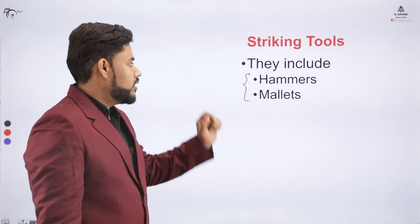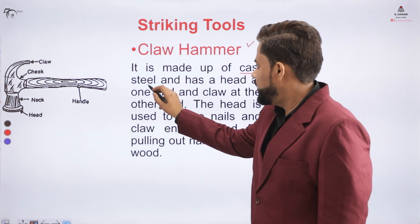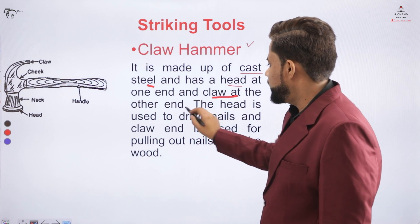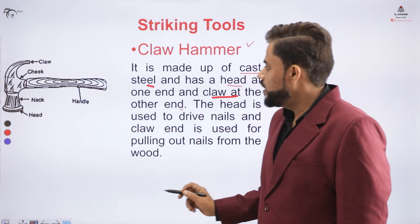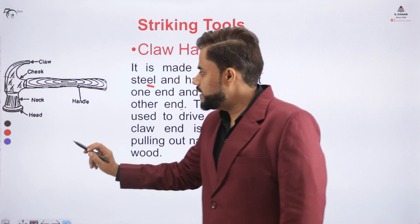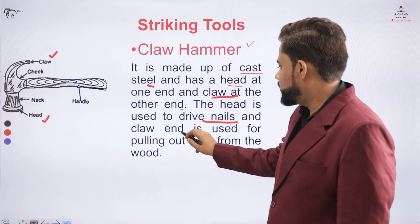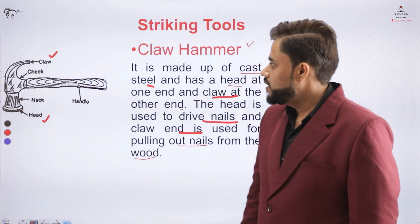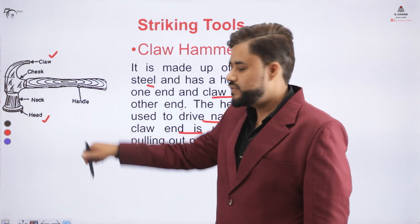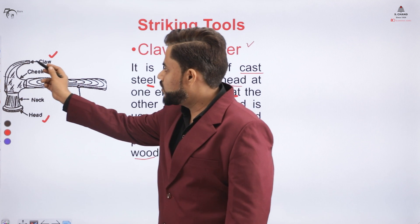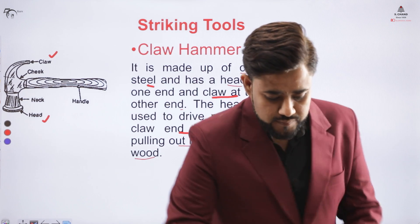In the category of hammer, you have the claw hammer. The claw hammer is made up of cast steel and has a head at one end and a claw at the other. It has a handle majorly made of wood, with a head part and a claw part. The head part is used to drive in nails and the claw part is used to pull out nails from the wood.